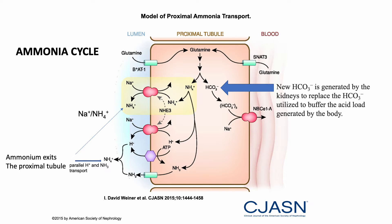This ammonium inside the proximal tubular cell needs to get out. It uses the sodium-hydrogen exchanger — now acting as a sodium-ammonium exchanger — where sodium goes in and NH4 gets out. Some NH4 escapes the cell in parallel with hydrogen, since NH3 binds with hydrogen to become NH4 plus. The ammonium is now out of the proximal tubule cell and into the lumen. This is step one.